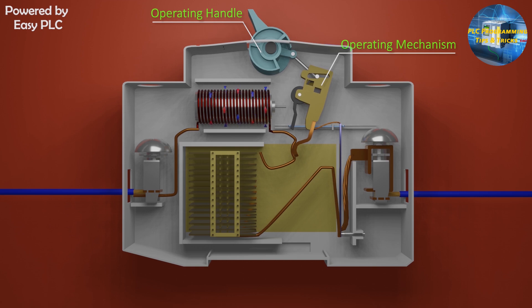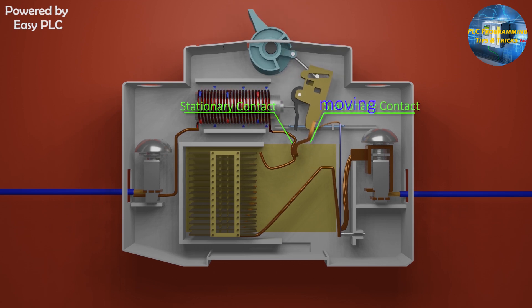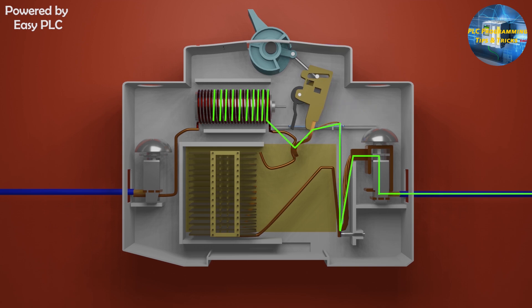Next, MCB have two contacts: one is moving and the other one is stationary contact. When we turn on the MCB this moving contact moves forward and gets in contact with the stationary contact. When both contacts close and start conducting the current, the current starts to flow through the MCB.